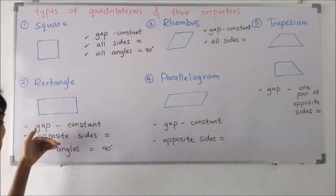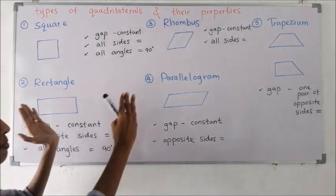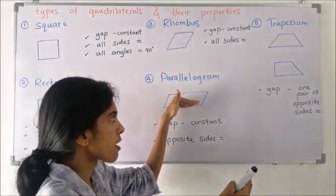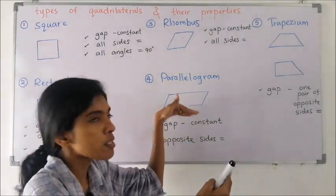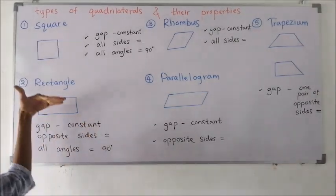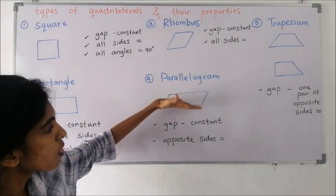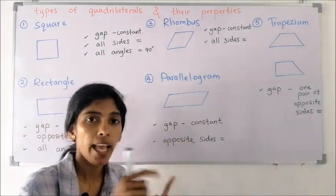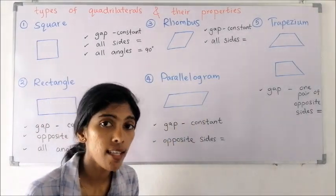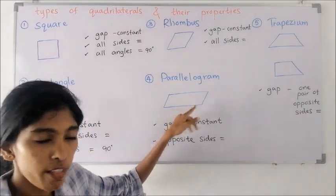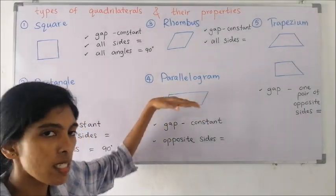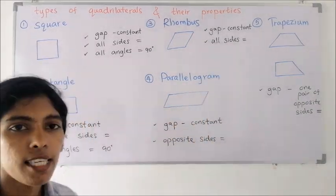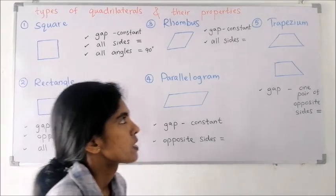The next one is a parallelogram. When we give a small hit to a rectangle it becomes slanted — that forms a parallelogram. In a parallelogram only opposite sides are equal, like in a rectangle. The angles are not equal. The gap between the opposite sides is also a constant.